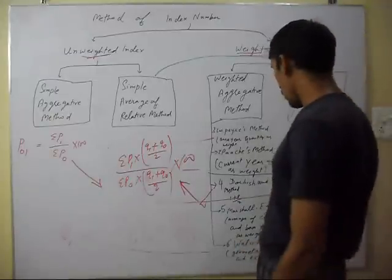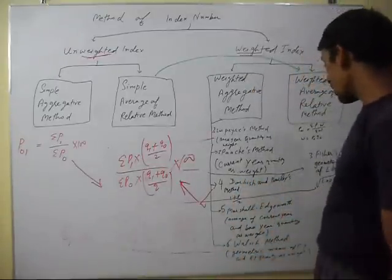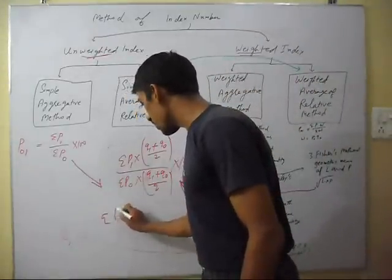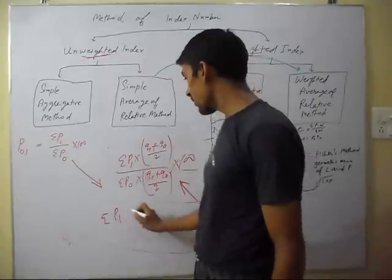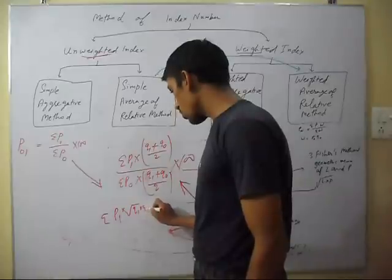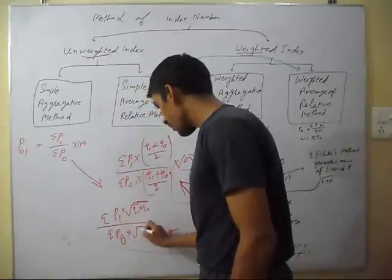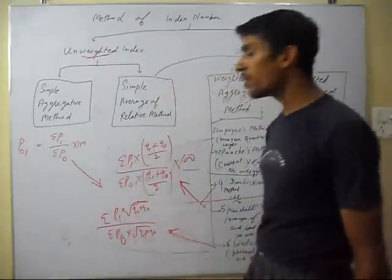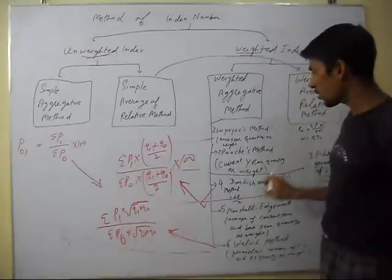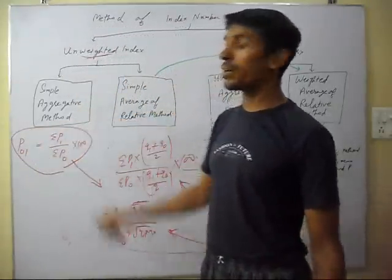The last is Walsh's method. This uses the geometric mean of current year quantity and base year quantity as the weight. The formula is: sigma P1 multiplied by square root of (Q1 into Q0), divided by sigma P0 multiplied by square root of (Q1 into Q0). All these methods — Fisher, Dorbish, Marshall, Walsh — are derived from the simple aggregative method with the addition of weights.